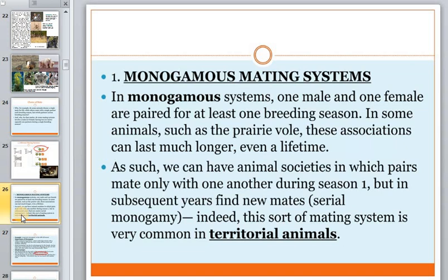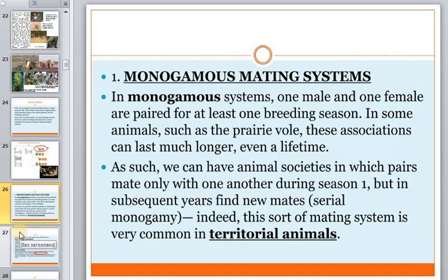In a classical monogamous mating system, one male and one female are paired for at least one breeding season. In some animals such as the pelagic seabirds, this association can last much longer — even a lifetime. Animals in seasonal monogamy pair with only one another during one season but may find different mates over several years. This mating system is very common in territorial animals.